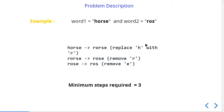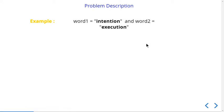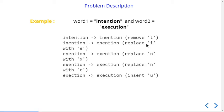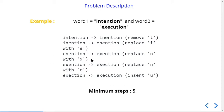The next example is converting 'intention' to 'execution'. First, we remove the t. Then we replace i with e, replace n with x, replace n with c, and finally insert a u between c and t. So we converted intention to execution in five steps. We need to find how many steps are required to convert one word to another using replace, delete, or insert operations.